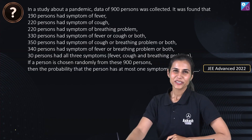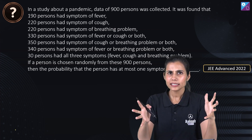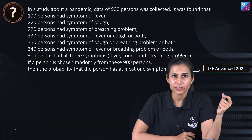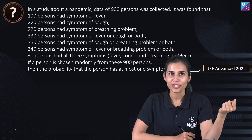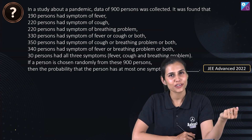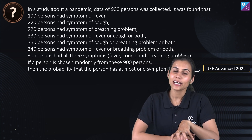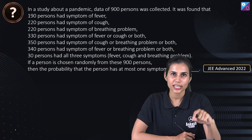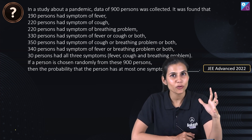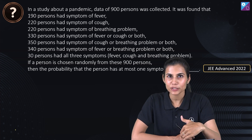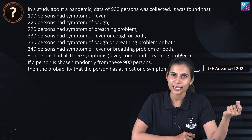Students have a tendency to underestimate set theory when it comes to JEE Advanced exam. But this question on screen is a brilliant question from the very latest JEE Advanced 2022 exam. It's a highly scoring question that can be very easily solved using Venn diagrams and the standard formulas for cardinality of sets.